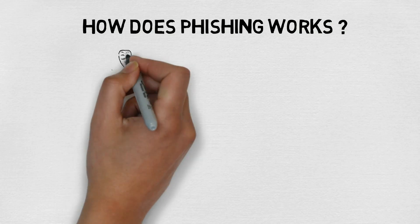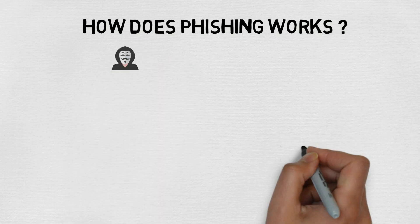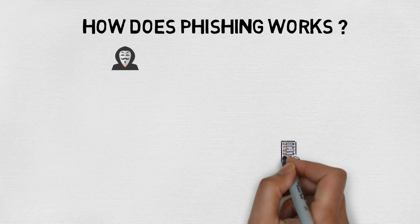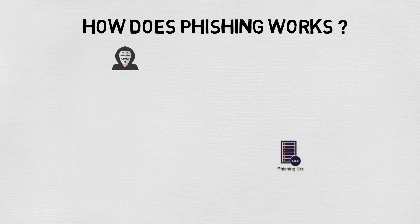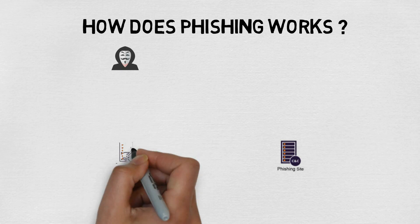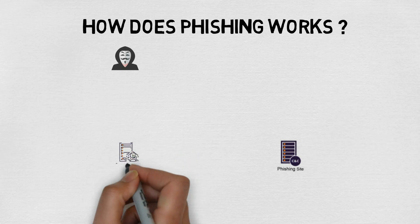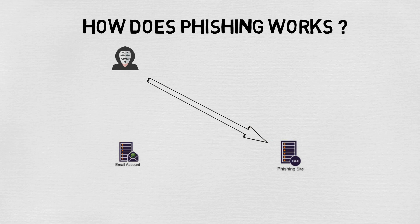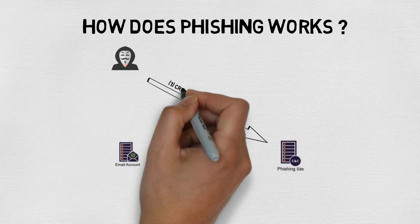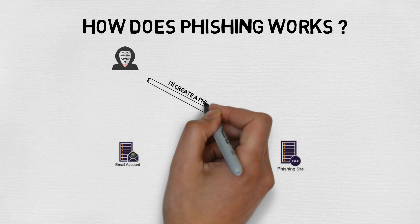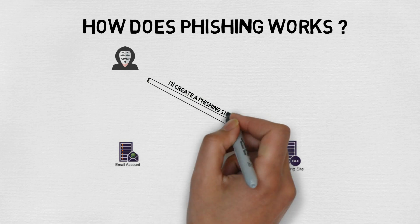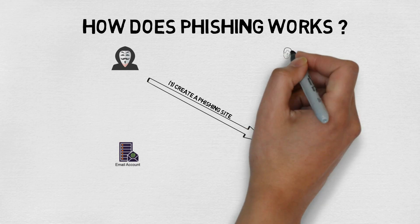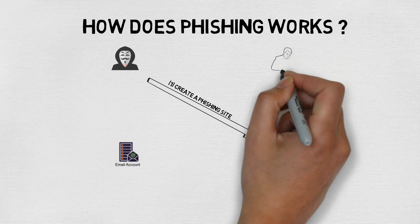Phishing is a type of social engineering technique used to fake out users and steal their identity. First, the attacker buys a compromised server or uses a hosting service and uploads the phishing kit to the server. The attacker then creates a phishing website which looks like the original.